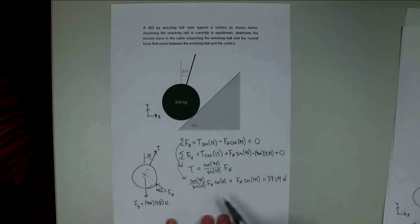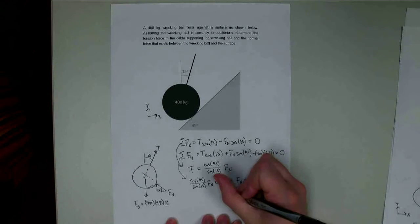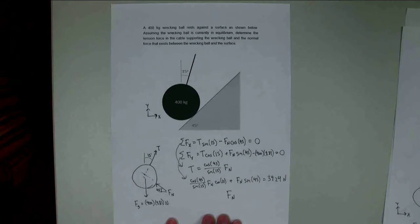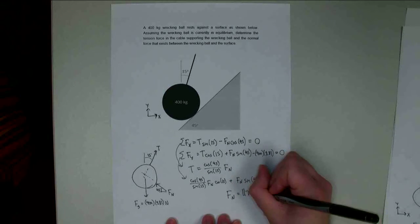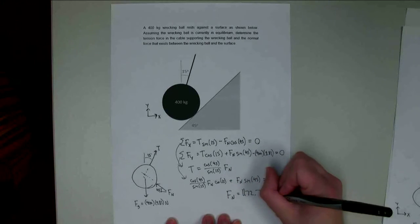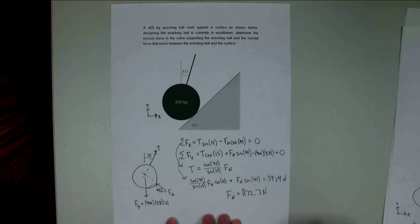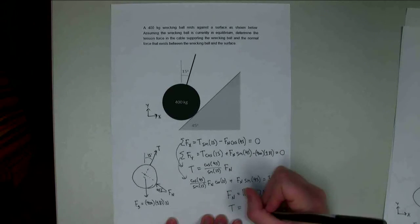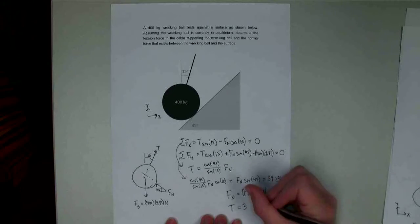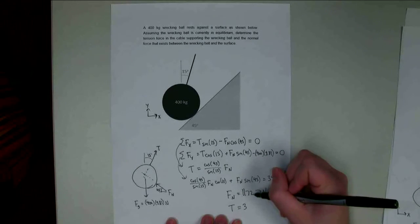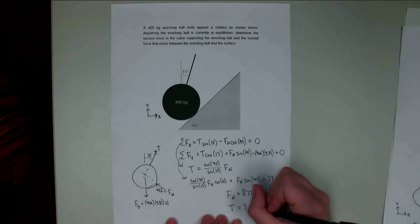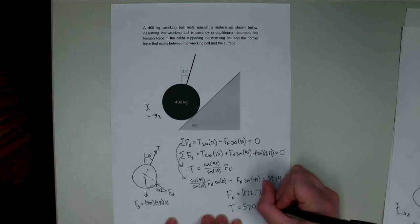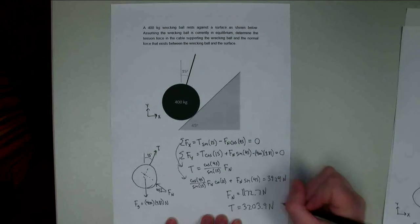There's only one unknown in this whole thing. If I use some algebra and solve for Fn, I should find that my normal force is going to be equal to 1,172.7 newtons approximately. I'm going to plug this normal force value back in up here, solve for t, and I get 3,203.9 newtons.